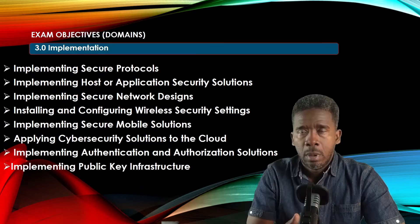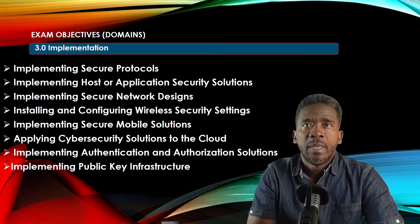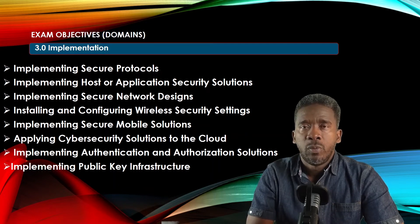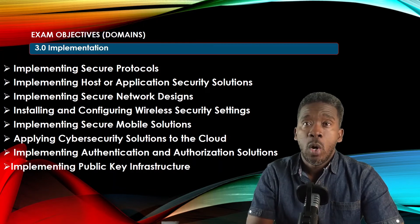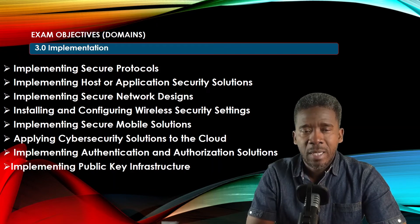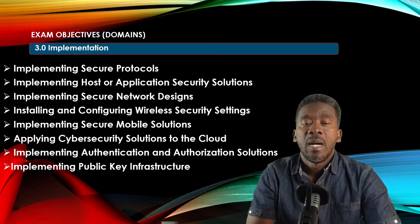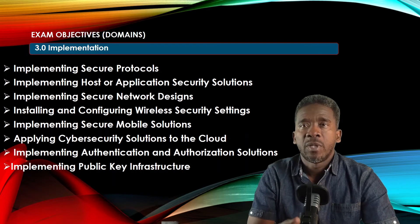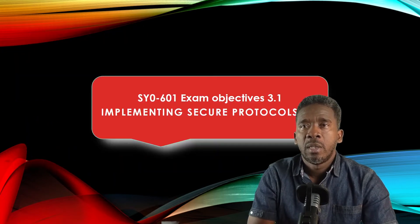Implementation makes up 25% of the exam. Exam objective 3.0 covers: 3.1 implementing secure protocols, implementing host or application security solutions, implementing secure network design, installing and configuring wireless security settings, implementing secure mobile solutions, applying cybersecurity solutions to the cloud, implementing authentication and authorization solutions, and implementing public key infrastructure.